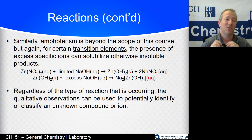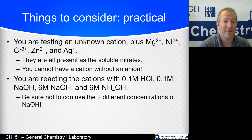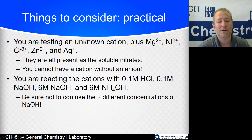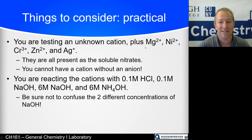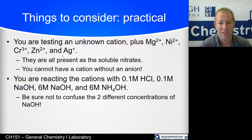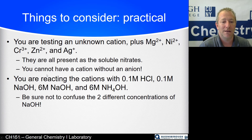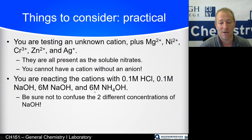So what are you actually doing in the lab? You'll have an unknown cation and known solutions of magnesium nitrate, nickel nitrate, chromium nitrate, zinc nitrate, and silver nitrate — nitrates are always soluble, no exceptions. These are the metal nitrates dissolved in water, not the pure metals. You will react each of those cations with dilute hydrochloric acid, dilute sodium hydroxide, more concentrated sodium hydroxide, and concentrated ammonium hydroxide. Make sure you don't mix up the two concentrations of NaOH.